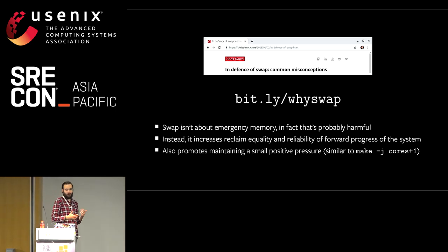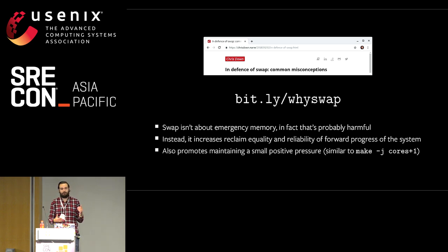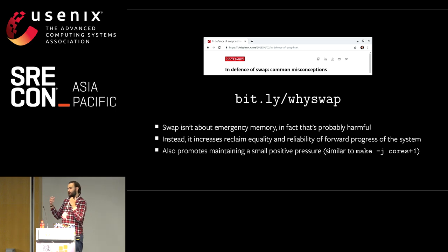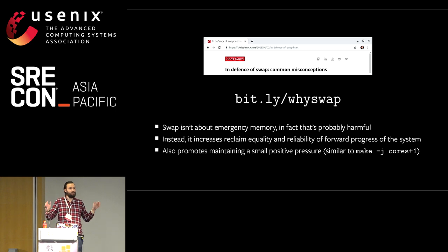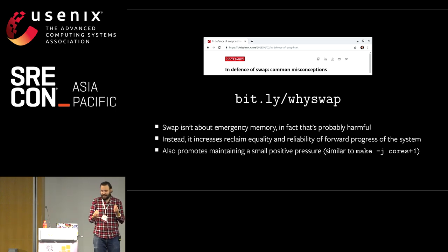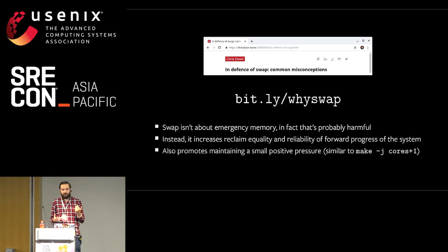Using swap is almost strictly about promoting positive memory pressure — using as much memory as we possibly can on the system without going over the edge. It has almost nothing to do with this concept of emergency memory or slower RAM; those are complete misconceptions. Swap allows reclaim on types of memory — like anonymous memory — that would otherwise be locked into RAM because we don't have any backing store for them. Without swap, it's really hard to run hot on memory. It's really hard to load a machine up for a memory-bound workload, because you can in an instant go from making the most efficient use of the machine to — oops — you went one over and now the machine is completely dead. With swap, you at least have some way of mitigating this problem.